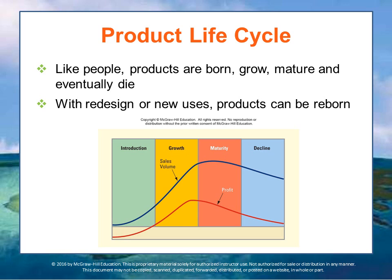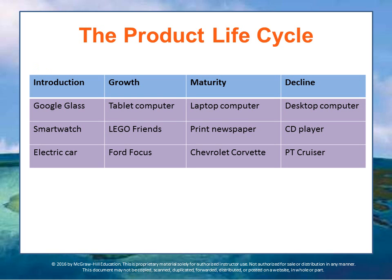This table shows examples of products in different life cycle stages. Google Glass and smartwatches and electric cars were in introduction. Growth examples include tablets, Lego Friends, and Ford Focus — cars that are taking off. Laptops and print newspapers are in maturity. Desktop computers are declining — you don't see them much, but existing ones still need replacing.